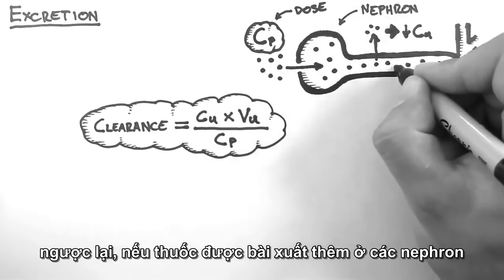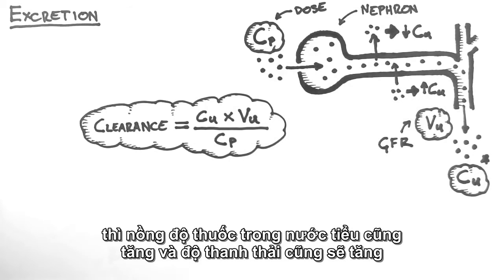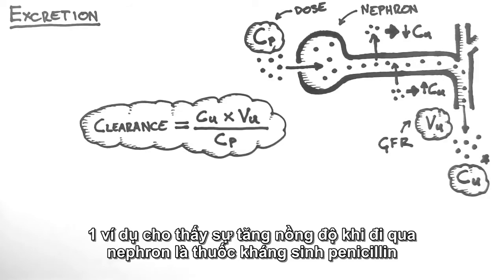Conversely, if the drug is secreted into the nephron, this will increase the concentration in the urine and also the clearance of that drug. An example of the drug that is actively secreted into the nephron is penicillin.